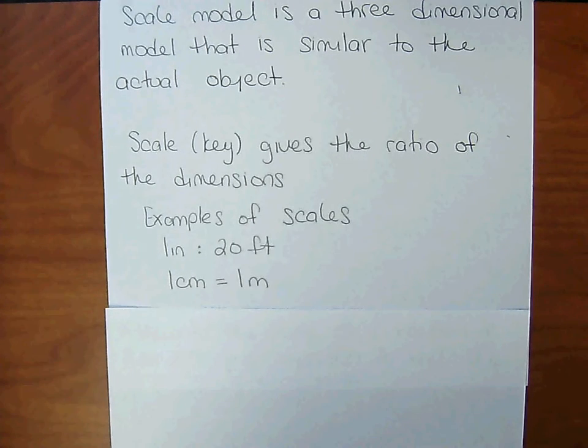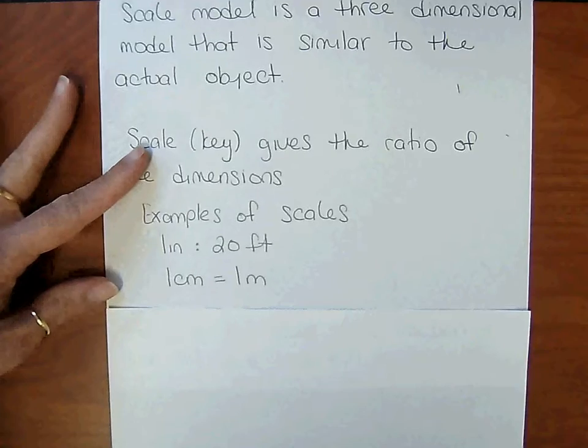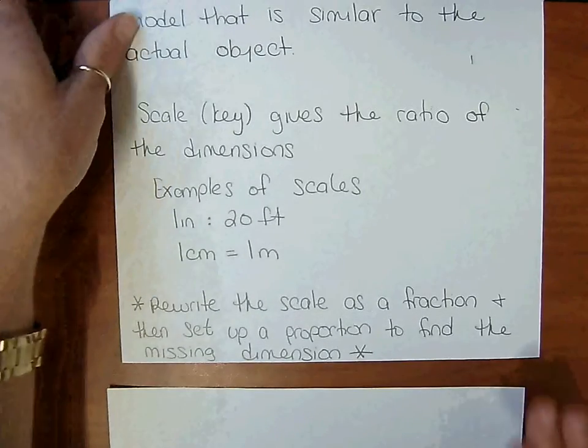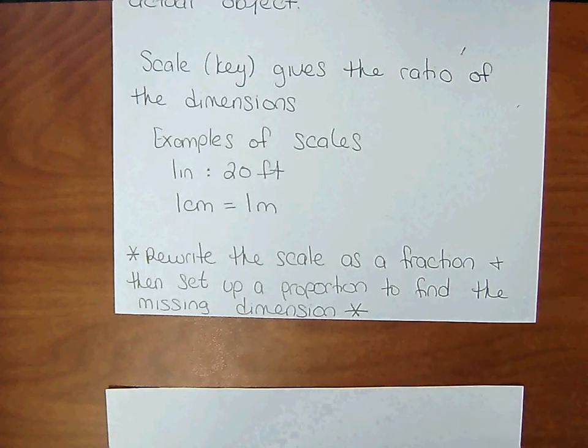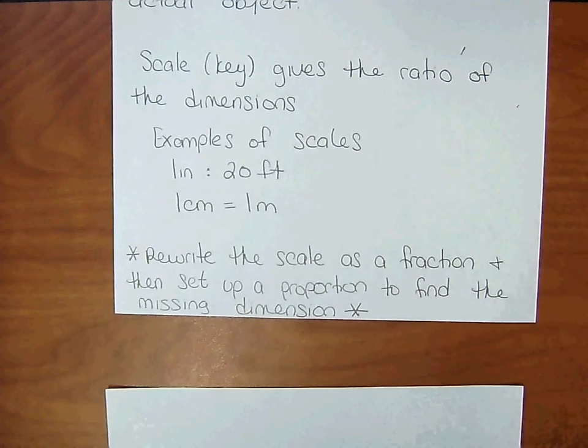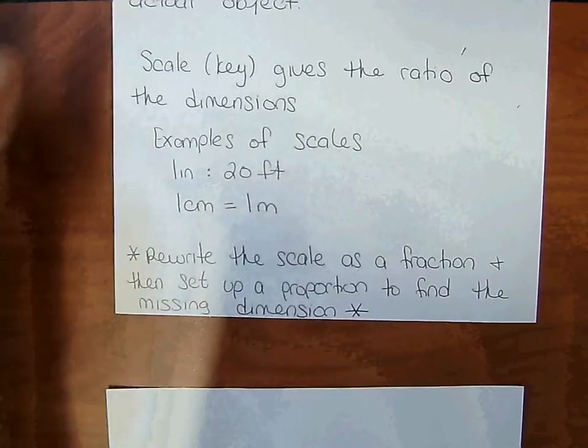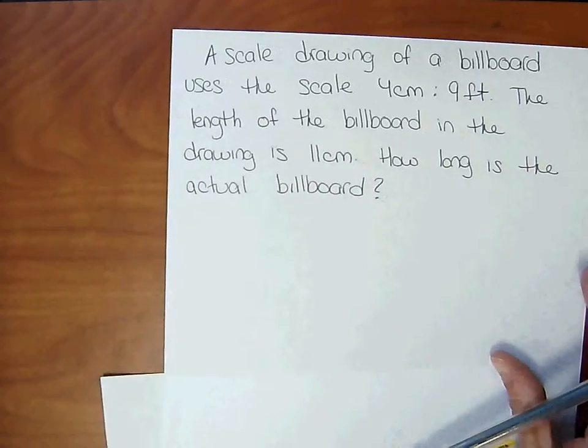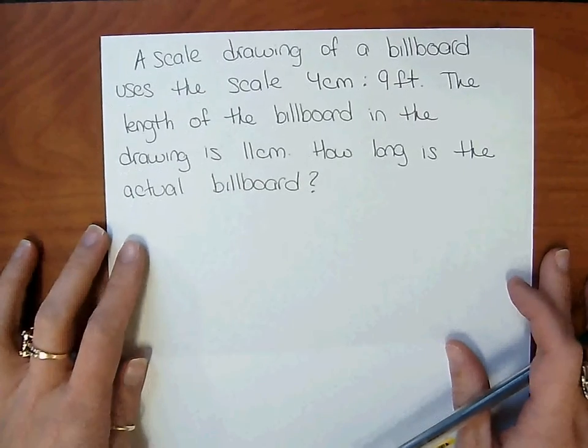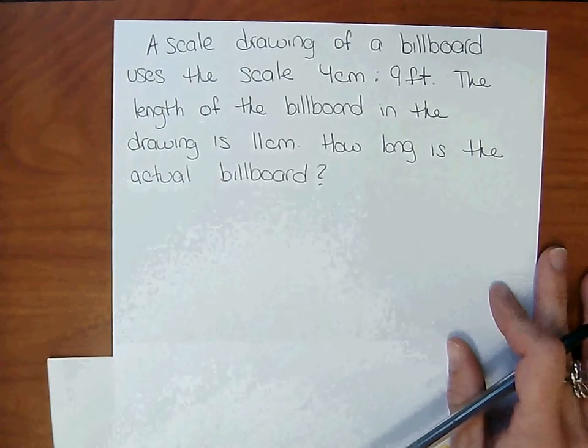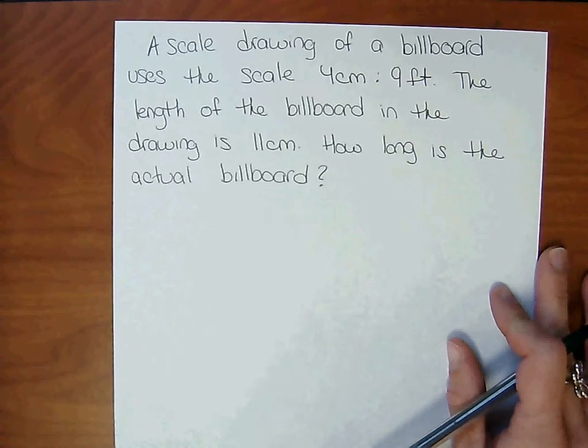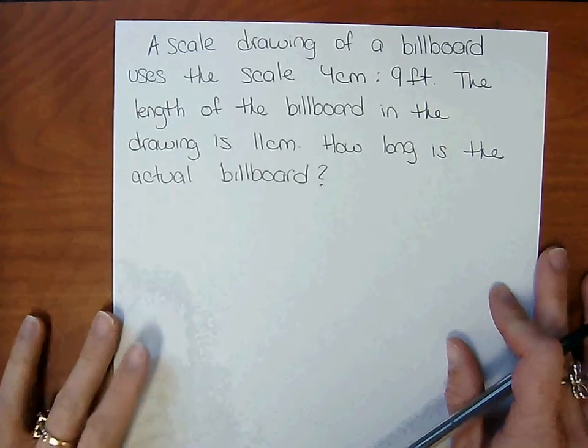So what you want to do is rewrite the scale as a fraction, and then set up a proportion to find the missing dimension. So, a scale drawing of a billboard uses the scale 4 centimeters to 9 feet. The length of the billboard in the drawing is 11 centimeters. How long is the actual billboard?